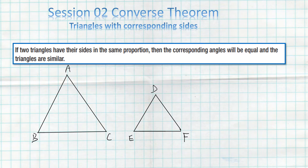This theorem is actually a converse theorem of the theorem we did in session two. In session two we did a theorem that states that if two triangles are equiangular, then their corresponding sides will be in the same proportion and the triangles will be similar. This is the converse, and it's about triangles with corresponding sides.